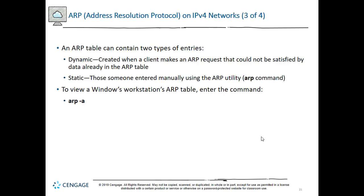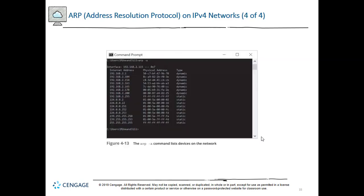To view your ARP table, go to the command prompt in Microsoft Windows and type 'arp -a' — it will give you a complete list of all the addresses you've learned about. You'll also see some addresses that have been statically assigned, such as multicast addresses, which are created by the operating system.